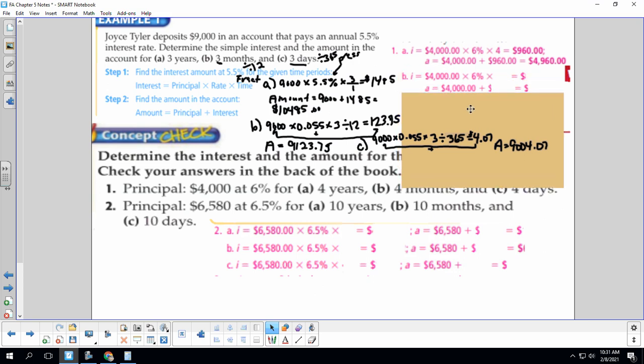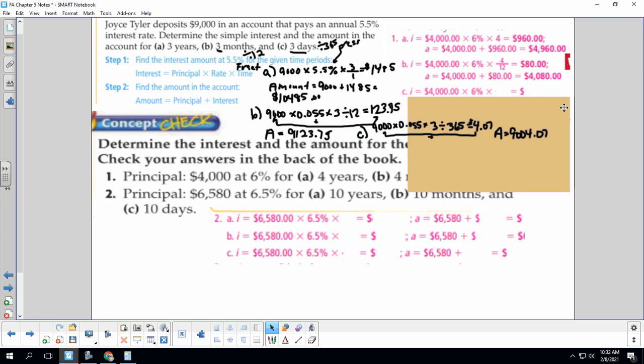Now we're going to do the four-month calculation. The setup is still the same. It's still 4,000 times 6%, but instead we have four divided by 12 because it's a portion of a year. It's not the whole year, and so when we do that in our calculator, we get 80. So then I add the 80 to my original 4,000, and we get 4,080.